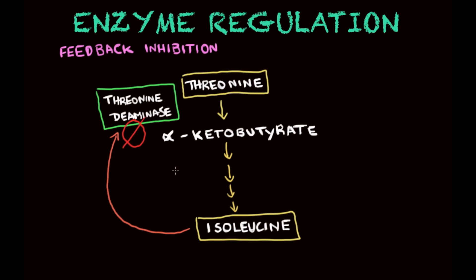After a few other steps, it will become isoleucine. What isoleucine does is inhibit the activity of threonine deaminase. This is a very smart way that cells came up with to save energy, because if this pathway is occurring and you produce enough isoleucine that you need, the smart thing to do is stop production through feedback inhibition. This product tells threonine deaminase to stop working, and the whole pathway stops until isoleucine is needed again.